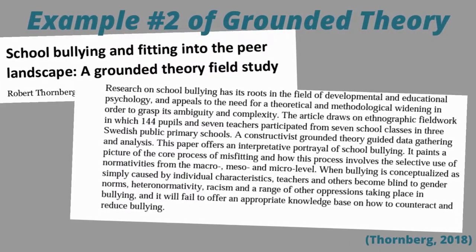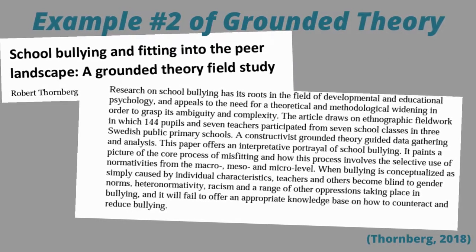A second example of grounded theory is an article written by Robert Thornburg in 2018: School bullying and fitting into the peer landscape, a grounded theory field study. Thornburg conducted a study on three primary public schools in Sweden. The study found that when bullies are viewed based on personal characteristics, a variety of other key oppressive factors like racism, genderism, and heteronormativity may be ignored. In other words, students may be acting out due to the pressure to fit in to the peer-accepted view of normal. He suggests that until anti-bullying work through political and social reforms and interventions take place, nothing will change.